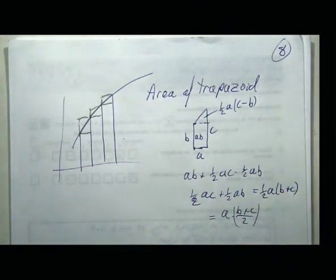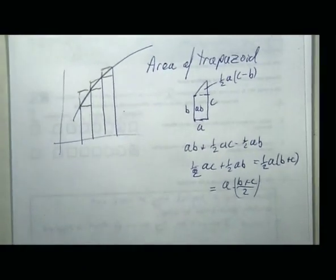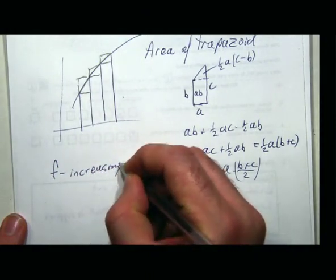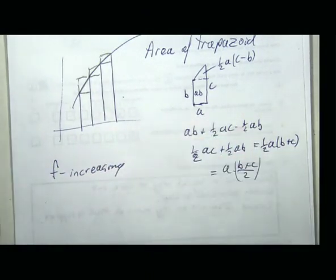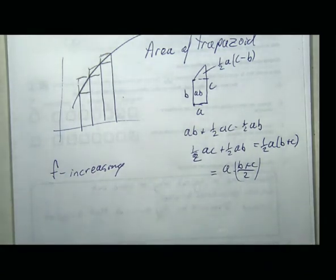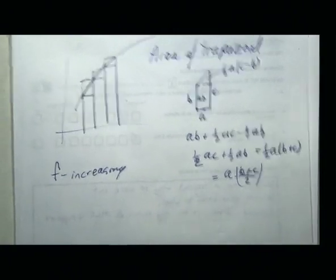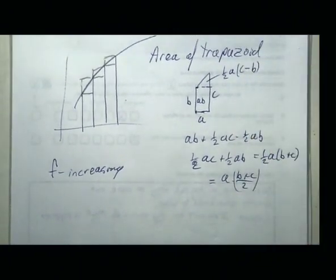The good thing about the trapezoidal rule compared to upper and lower sums: I don't need the maximum or minimum — I just use the endpoints of each interval. These things fall under the heading of Riemann sums. The upper sum and lower sum are special cases; the trapezoidal rule is another specific type.